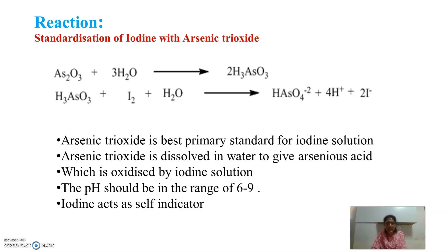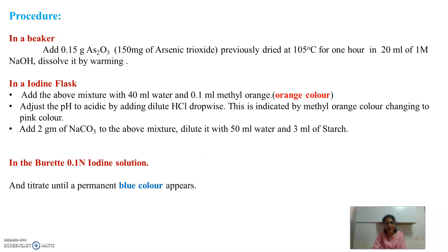The pH should be in the range of 6 to 9, and iodine acts as a self-indicator. For the procedure: in a beaker, take 0.15 grams (or 150 mg) of arsenic trioxide, previously dried at 105 degrees for one hour. Add 20 ml of 1 molar sodium hydroxide solution and warm gently in an iodine flask.